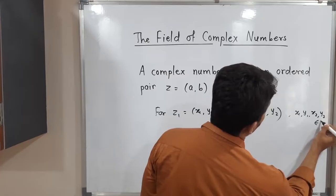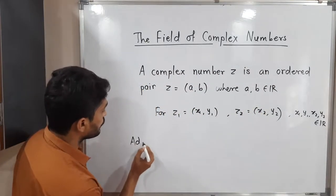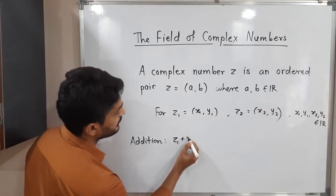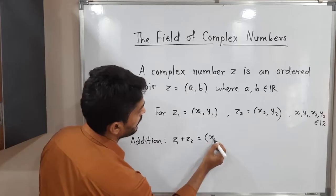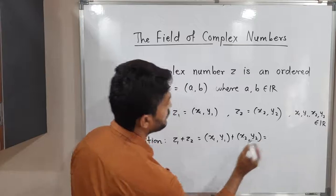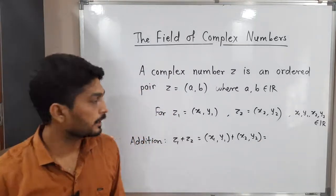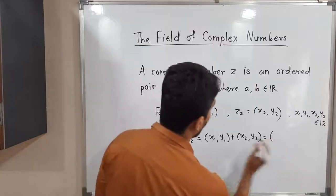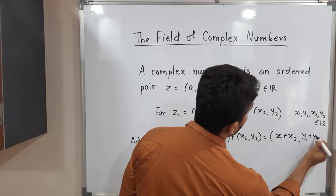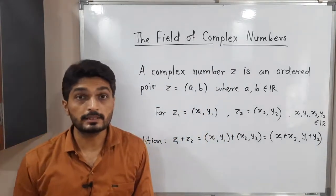Addition is defined in a very simple way — component-wise. So z1 plus z2, which equals (x1, y1) plus (x2, y2), gives us (x1 plus x2, y1 plus y2). We simply add each component separately.